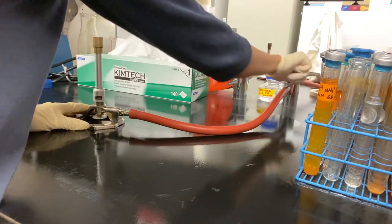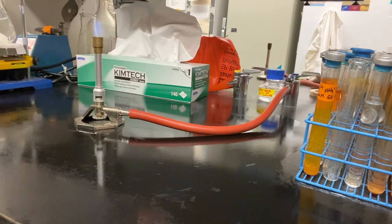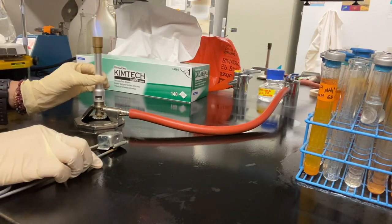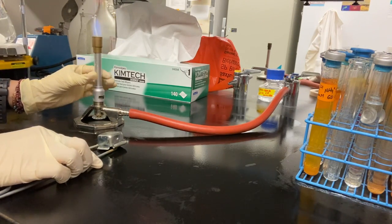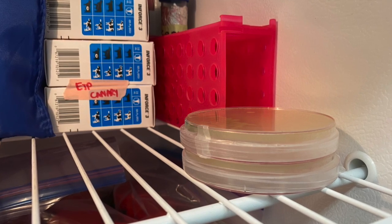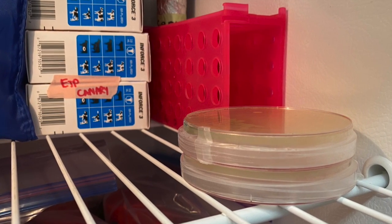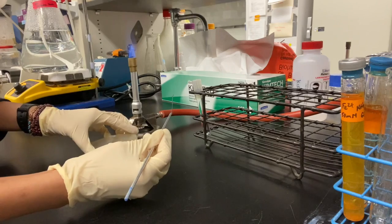Always using aseptic technique by wiping down our bench and lighting a Bunsen burner, we can grab an isolated colony from our streak plate and inoculate the isolated colony into 5ml of our MD solution.